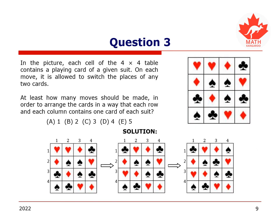Here is the solution. In the original table, there are three rows, first, second, and third, which do not contain one card from each suit. Hence, one move cannot solve the problem because one move affects no more than two rows while we need to change all three of them.